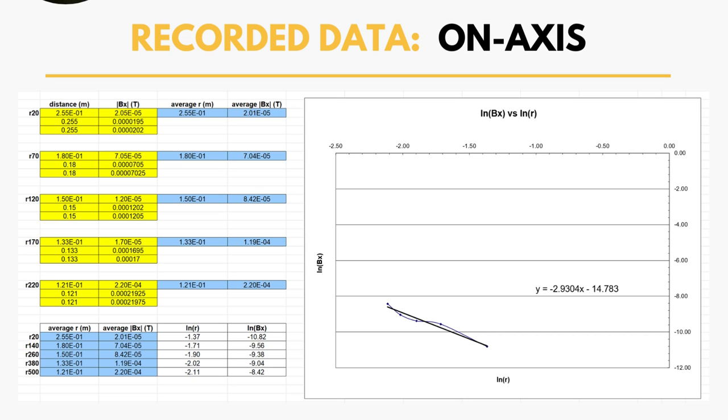When we were collecting data for the on-axis positions, this is what we got, where we actually did ln of Bx and ln of r for our x and y components of this graph. This will be important in further slides.